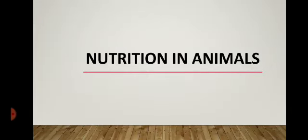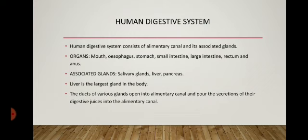Hello students, we are continuing this chapter on Nutrition in Animals. Today our topic is the human digestive system. The human digestive system is a system which consists of the alimentary canal and its associated glands. The alimentary canal is a long tube running from mouth to anus of a human being in which digestion and absorption of food takes place.